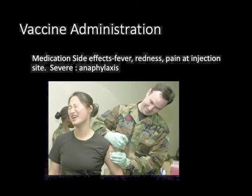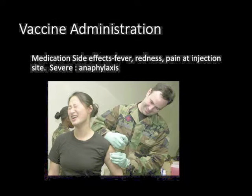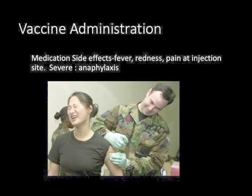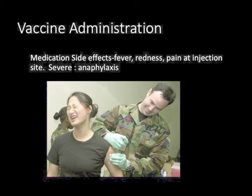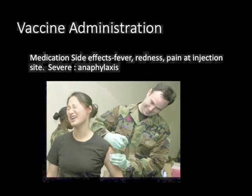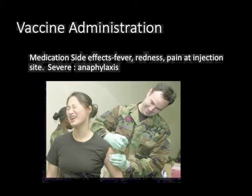A vaccine is a product that produces immunity from a disease, and it can be administered through needle injections, by mouth, or by aerosol. A vaccine is the injection of a killed or weakened organism that produces immunity in the body against that organism. Some vaccines have egg proteins in them, so allergies to eggs should always be checked. Many facilities will hold vaccines if the patient has a fever, the flu, or other serious infections. Some vaccines have side effects, including fever, redness, and pain at the injection site. Severe anaphylaxis is possible, and patients should always be observed for at least 15 minutes after a vaccination.